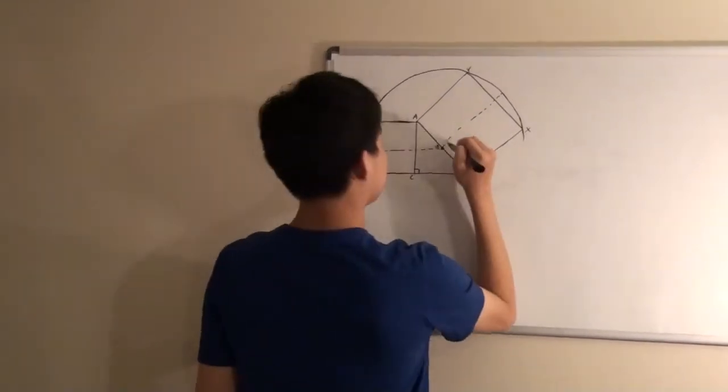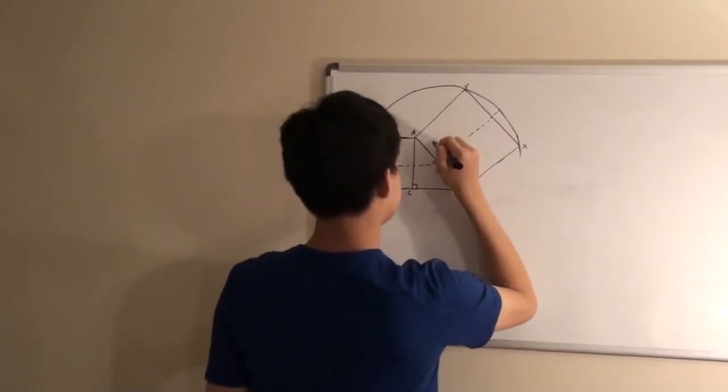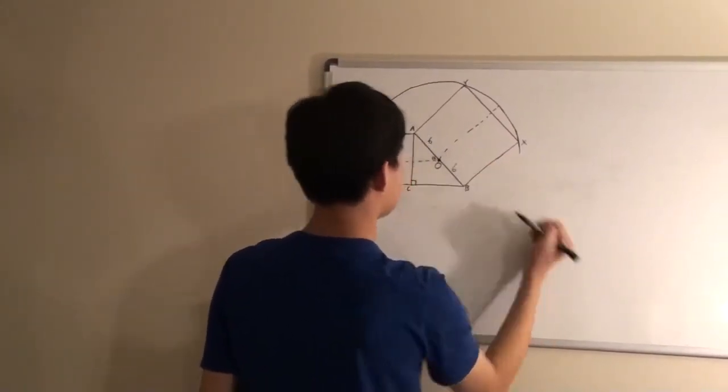So we can just conclude that the center of the circle is also the middle of the hypotenuse, which means that, we can name this O, which means that AO is 6 and BO is also 6.